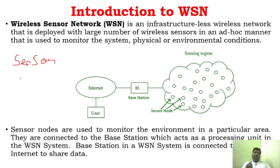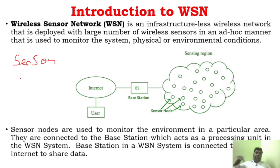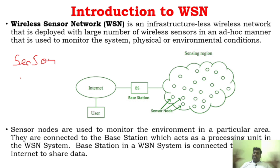For example, if I want to measure the temperature of my body, I can use a single sensor to measure that particular body temperature. But if I want to measure the temperature of a particular room, I have to use a lot of sensors — I have to deploy many sensors around that room so that I can get accurate information about the temperature of that room. When you are using more sensor nodes, that is called a wireless sensor network.